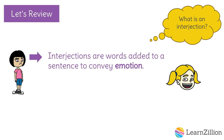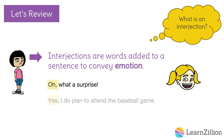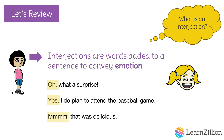Introductory elements like yes, no, indeed, and well are also interjections. Some interjections are even sounds. For example: Oh, what a surprise. Yes, I do plan to attend the baseball game. Mmm, that was delicious. Notice that the interjections are set off from the rest of the sentence by a comma.